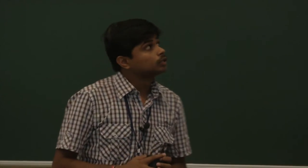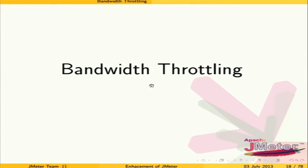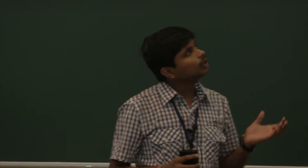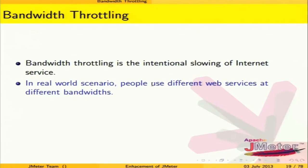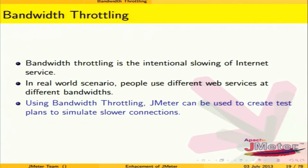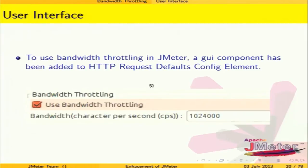Bandwidth throttling is the intentional slowing down of internet services, often used by ISPs to control bandwidth usage. In the real world, users access web services through different types of internet connections with different bandwidths — mobile internet has much lower bandwidth than broadband. We incorporated a bandwidth throttling GUI where the tester can enable throttling and specify the desired bandwidth.